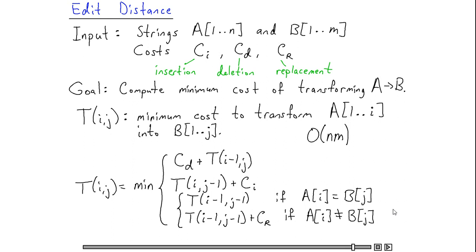and when it's finished, the optimal solution, that is the edit distance between A and B, will end up being stored in T(n,m).